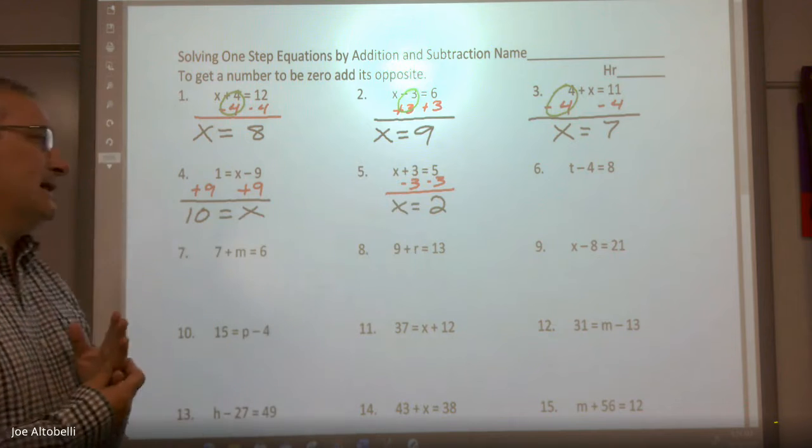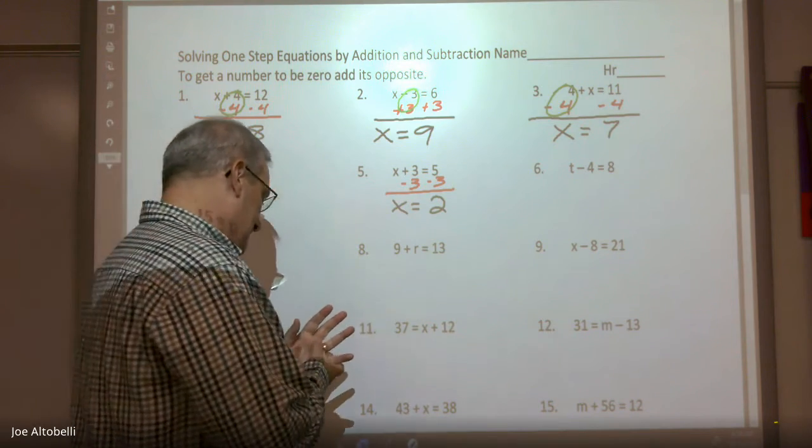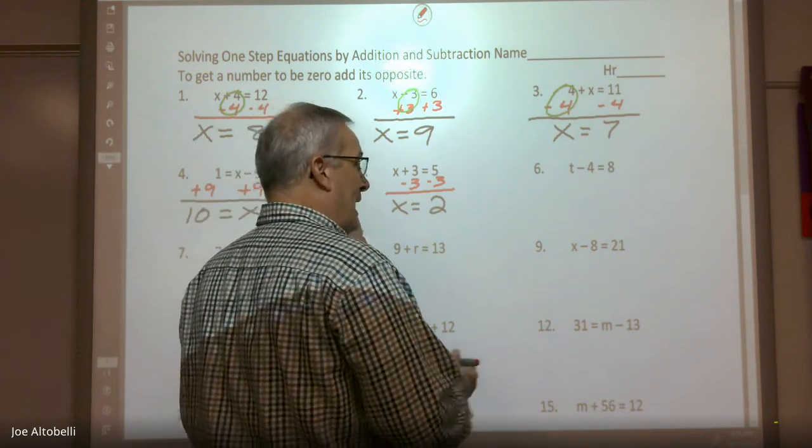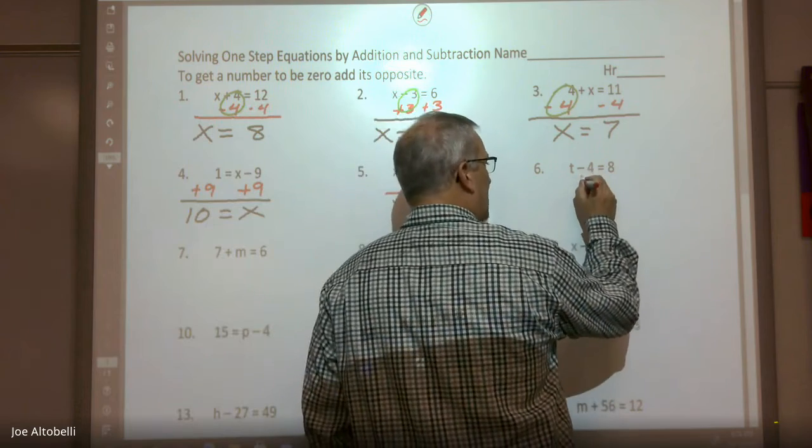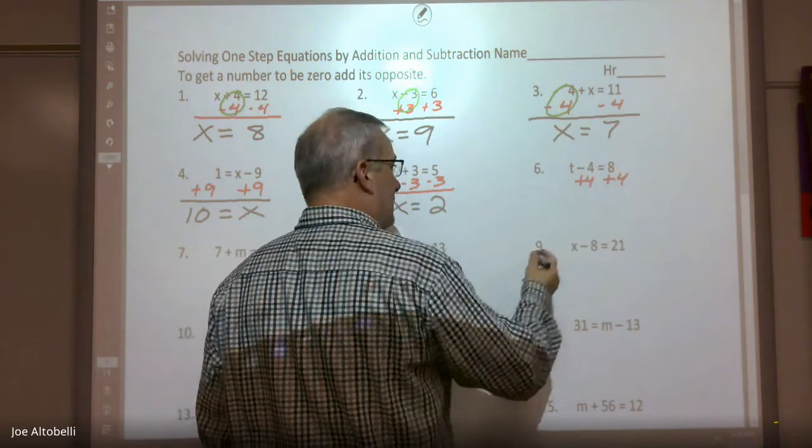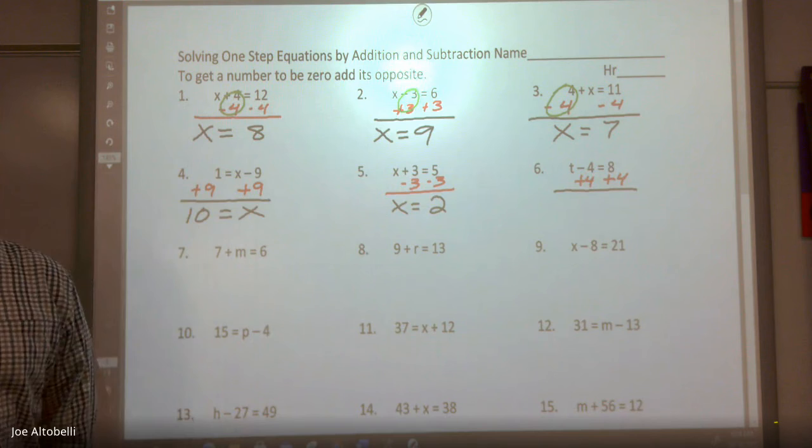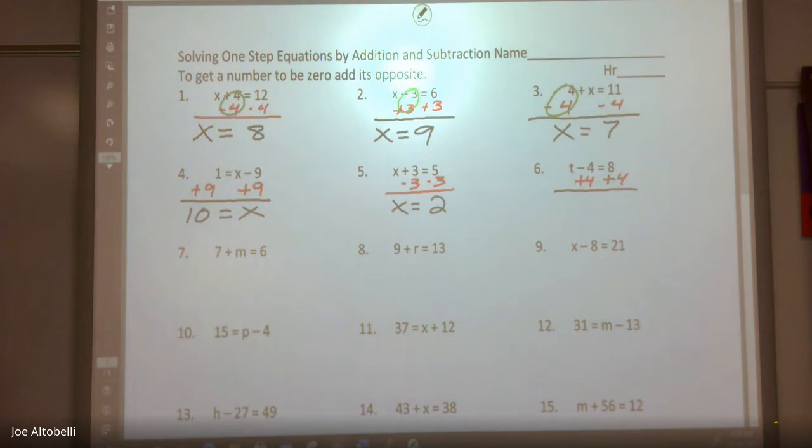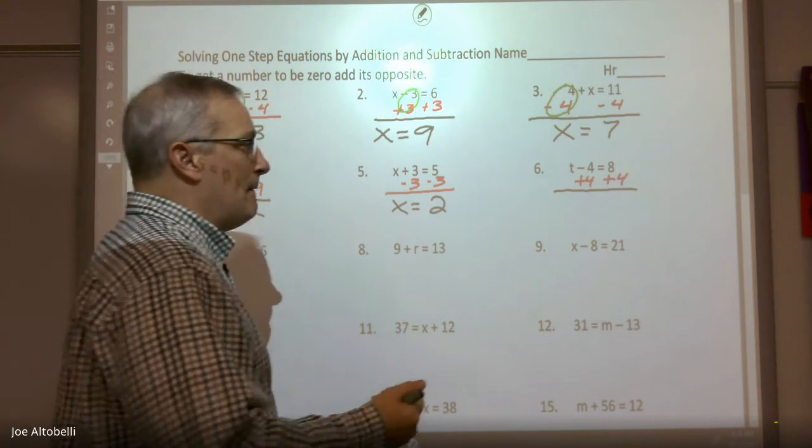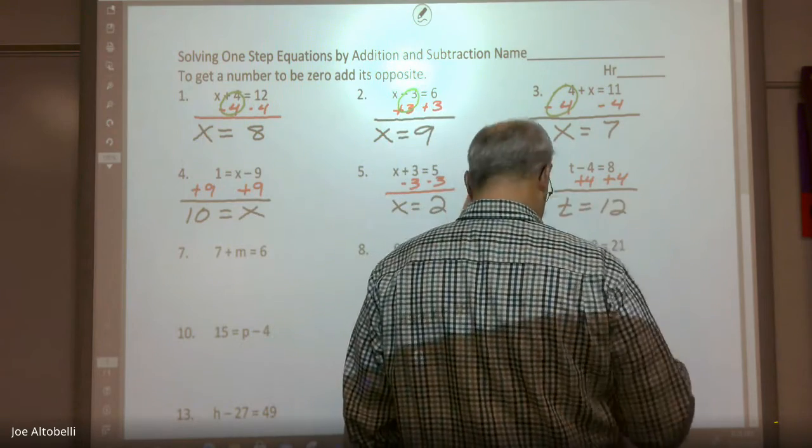Number six, what do I have to add to both sides? Four. I have to add 4. I'm going to add 4. And again, the challenge today isn't so much finding the answer, it is what am I going to write and where am I going to write it. And you get t = 12.